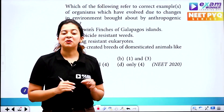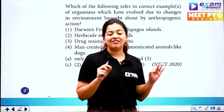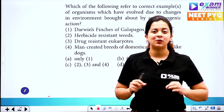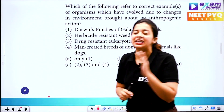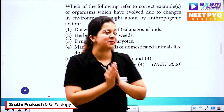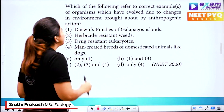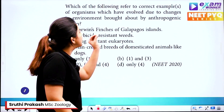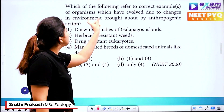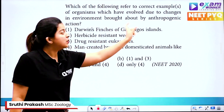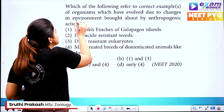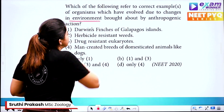Welcome to the evolution chapter of the PYK question. Which of the following refers to the correct example of organisms which have evolved due to changes by environment brought about by anthropogenic action?